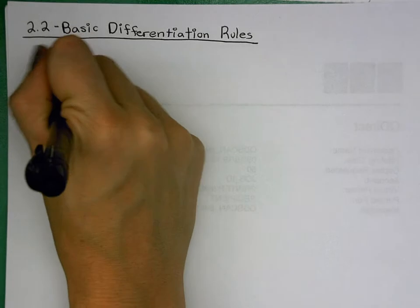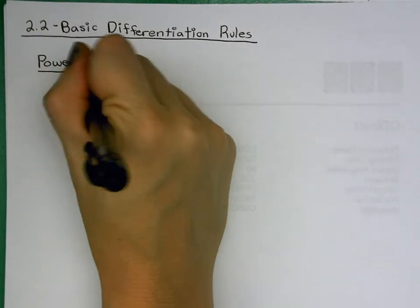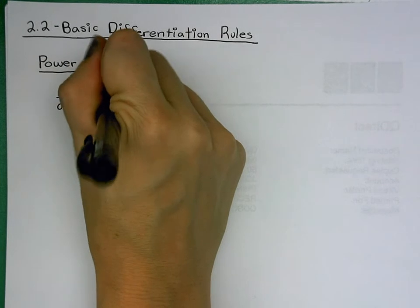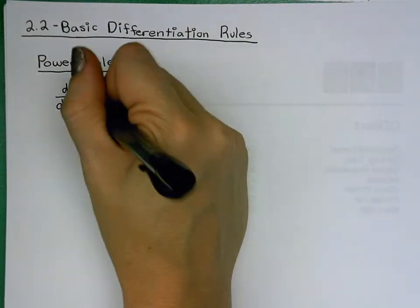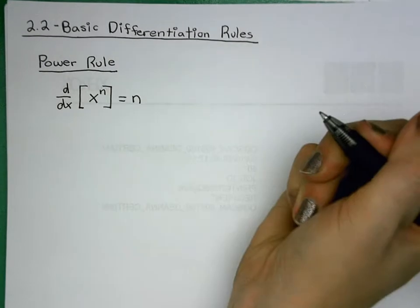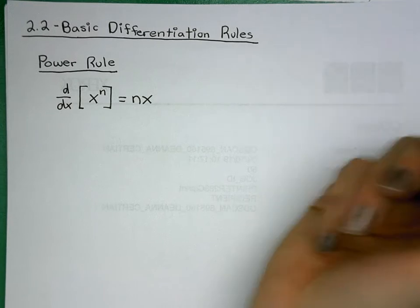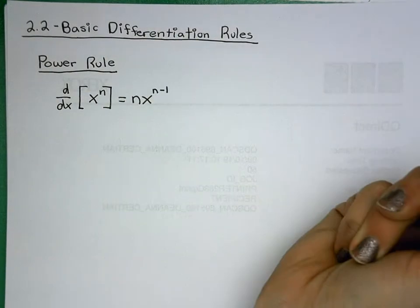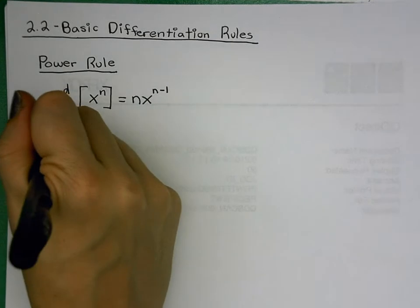Taking the derivative using power rule: if I have a function raised to some exponent, to take its derivative we bring the exponent down in front as a coefficient, leave the base alone, and subtract one from the exponent.